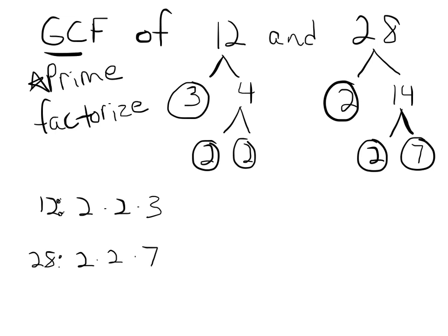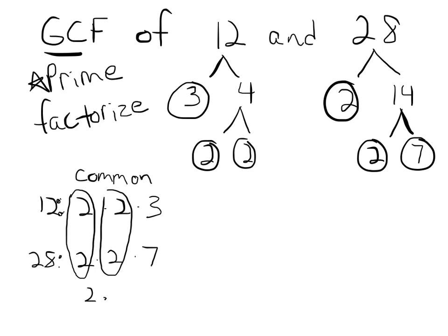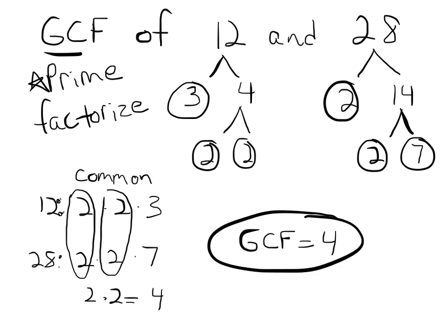Our original problem said find the GCF — find the greatest common factor. Let's look at all the common factors of 12 and 28. I want you to write the word 'common' above these. Since they both have a 2 and a 2 in common, what we do is multiply those: 2 × 2 = 4. So the greatest common factor of 12 and 28 is 4.